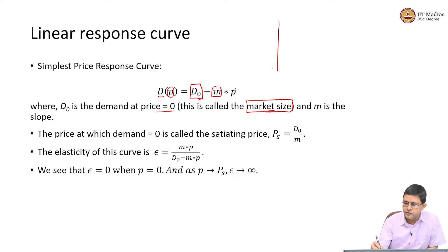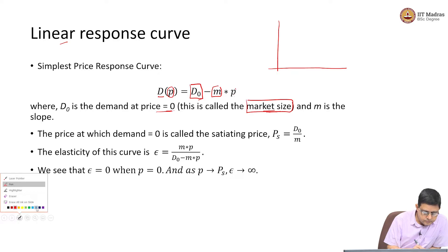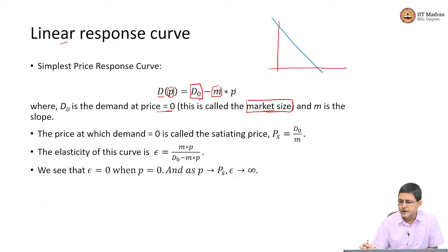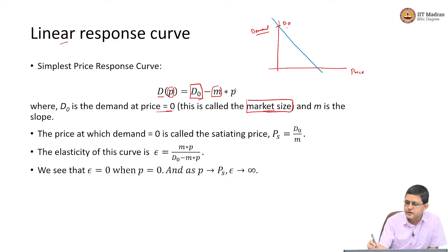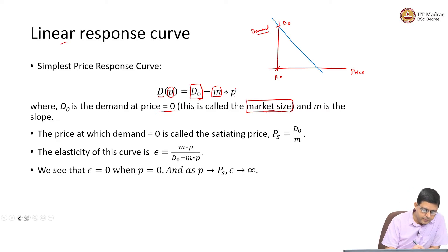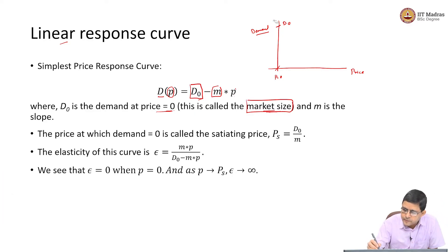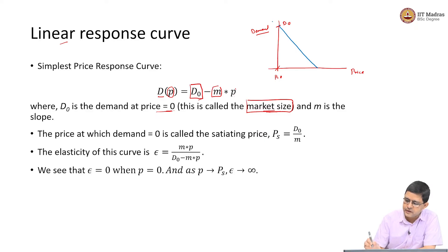Mathematically, D0 will be the y-intercept. We are talking about a linear response curve, so we are going to draw a straight line. On the x-axis is always the price and y-axis is always the demand — the demand response to a particular price. This guy here is D0, because the price is 0. At price equal to 0, what is the total market size? I should simply start here and end here because we are only considering the non-negative region — I should not extend it below the x-axis.